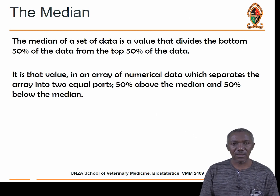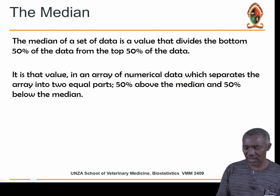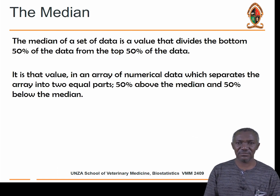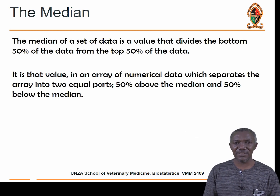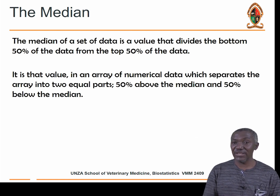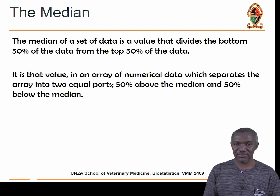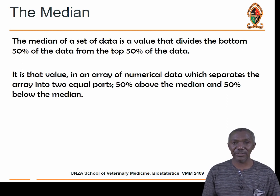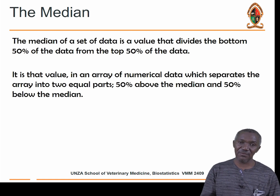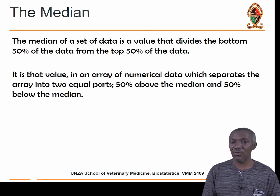The other parameter used for measuring central tendency is the median. The median of a set of data is a value that divides the bottom 50% of the data from the top 50%. When you arrange numbers in numerical order, the median falls in the middle of the dataset and separates them into two halves.